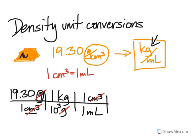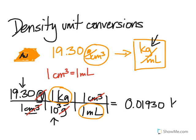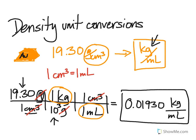This just becomes a calculator problem at this point. What's 19.30 divided by 1000? That gives me 0.01930 kilograms per milliliter. So that is the converted unit of density for gold in terms of kilograms per milliliter.